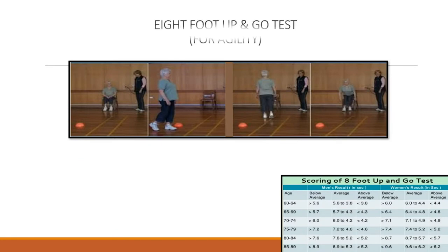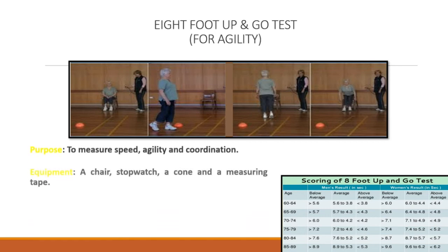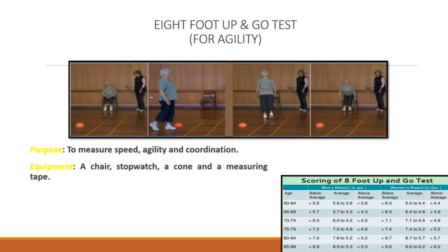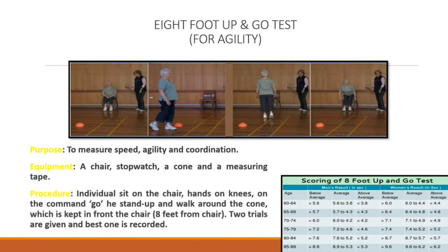8 Foot Up and Go Test for Agility. Purpose: To measure speed, agility, and coordination. Equipment: A chair, stopwatch, a cone, and a measuring tape. Procedure: Individuals sit on the chair with hands on knees. On the command go, they stand up and walk around the cone, which is kept 8 feet in front of the chair. Two trials are given and the best one is recorded.